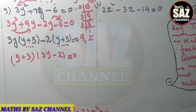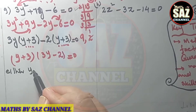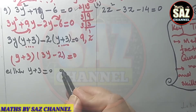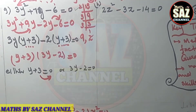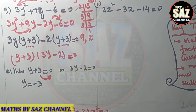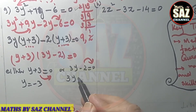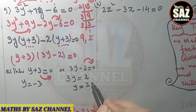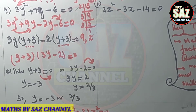The common group is (y + 3). Extract it out: (y + 3)(3y - 2) = 0. Apply either-or condition: either y + 3 = 0, giving y = -3, or 3y - 2 = 0, giving y = 2/3. The two solutions are y = -3 or y = 2/3.